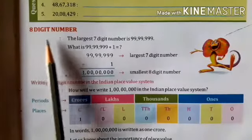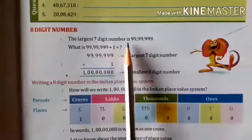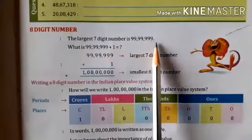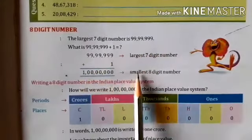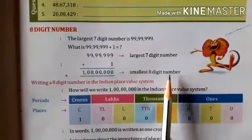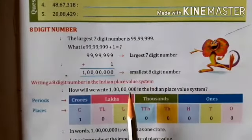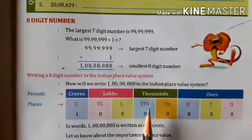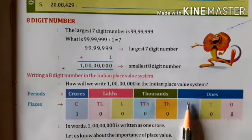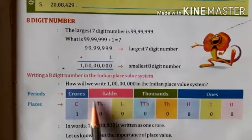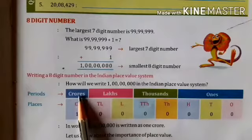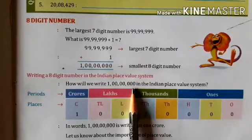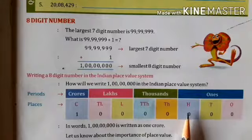Now come to the 8 digit number. The largest 7 digit number is 99,99,999, and if we add 1 with this number we get one crore, which is the smallest 8 digit number. Now let's see how we can write one crore in the Indian place value chart. The places are: ones, tens, hundreds, thousands, ten thousands, lakhs, ten lakhs, and crores. The periods are: ones, thousands, lakhs, and crores.